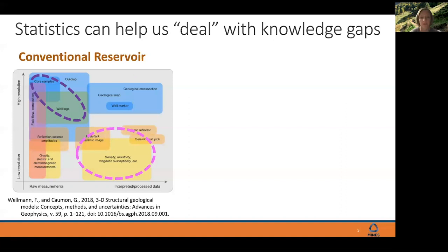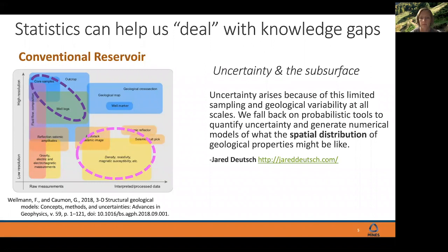But it's not a direct measurement of the characteristics or properties that we really need to know, which is what well logs and core samples give us. That's more of the primary data. In order to build these models, we have to somehow link those two together. Uncertainty arises because of this limited sampling and geological variability at all scales.